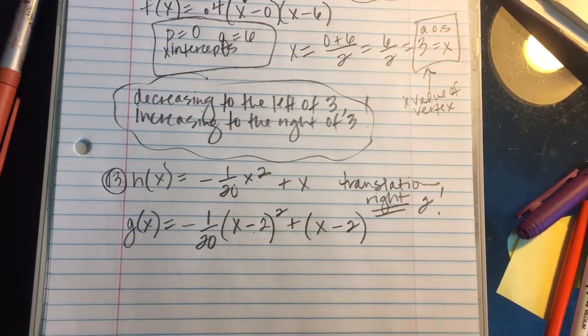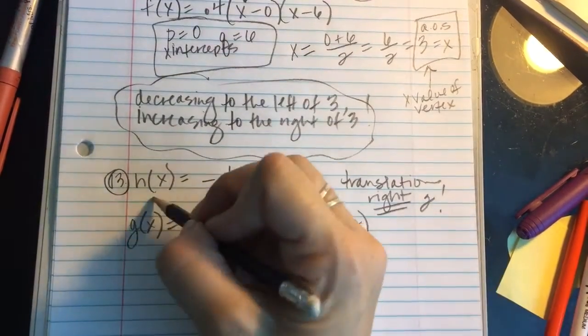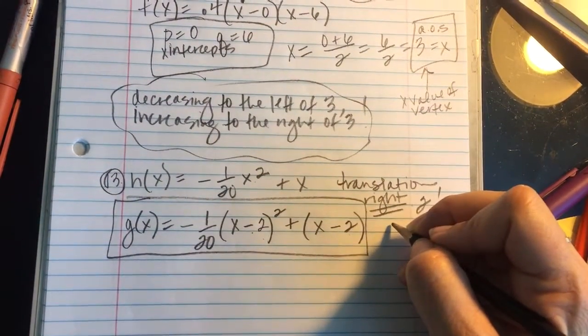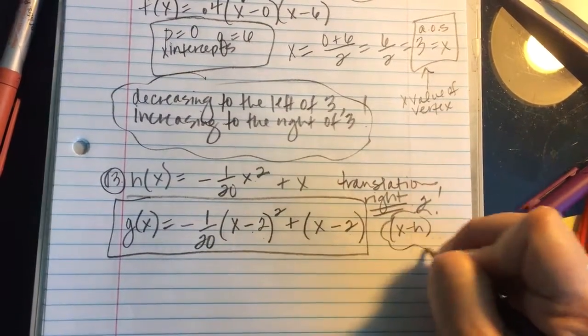So that's the model for the new path. I'm not even going to simplify it. I'm going to leave it right like that. So translation right affects x by subtracting, and it happens inside parentheses. It has to do with that x minus h piece.